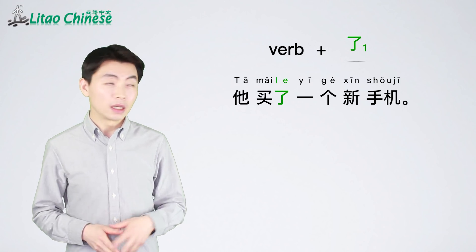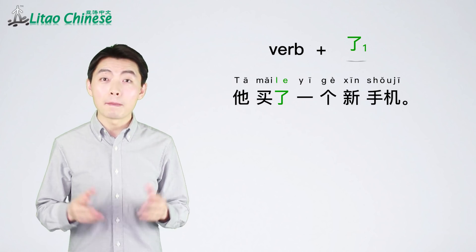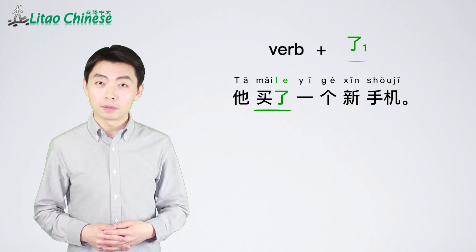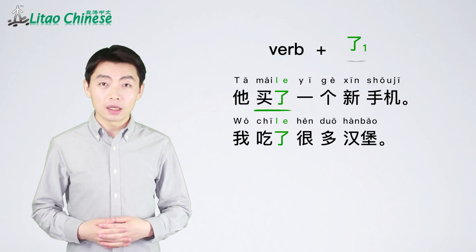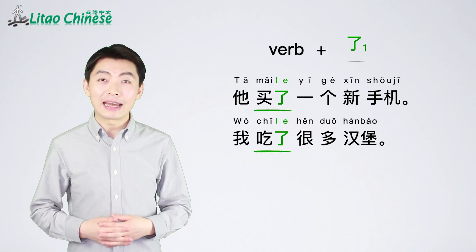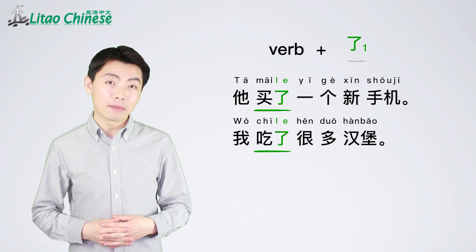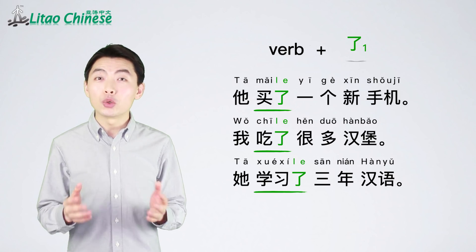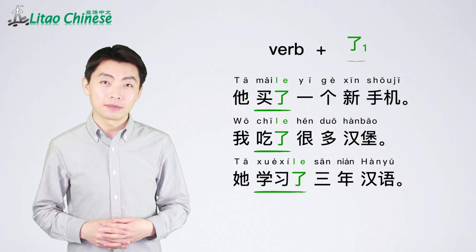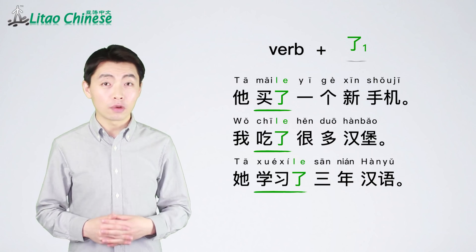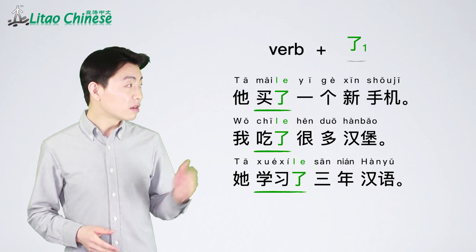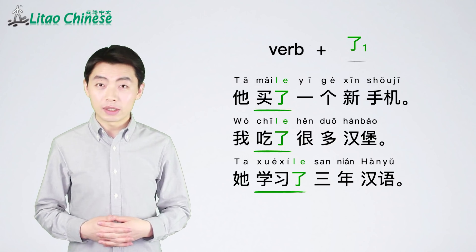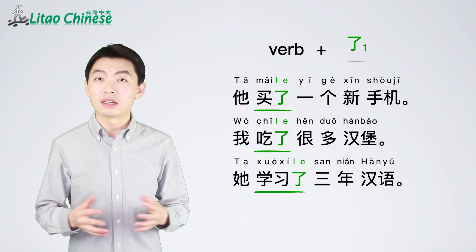For example: 她买了一个新手机 — 买了, bought. She bought a new mobile phone. 我吃了很多汉堡 — 吃了, ate. I ate a lot of hamburgers. 她学习了三年汉语 — 学习了, studied. She studied Chinese for three years. In these three sentences, we put 了₁ after the verbs to express the completion of an action.